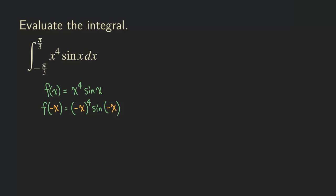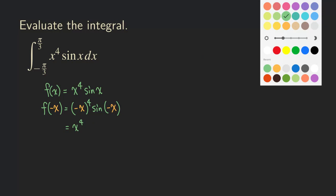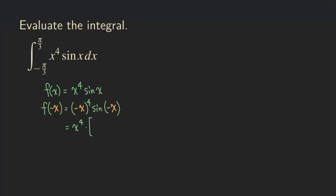Let's check here. We know that negative x to the fourth is actually just x to the fourth — the negative sign does not really matter here. And what about sine of negative x? We know sine is an odd function. So when we do sine of negative x, we can actually rewrite this as negative sine of x.